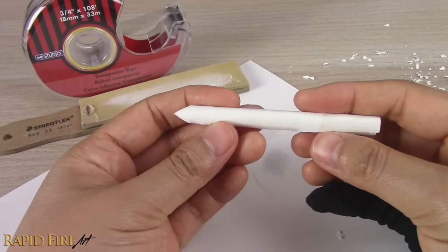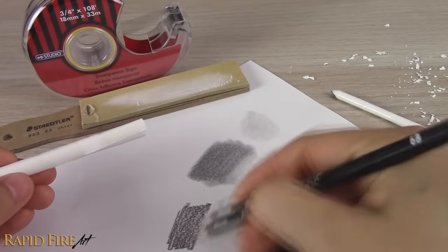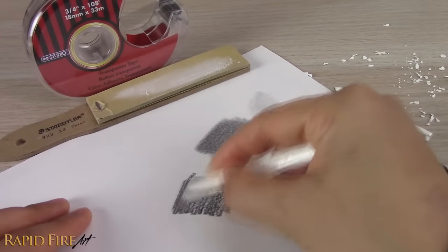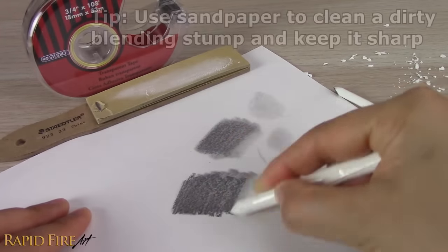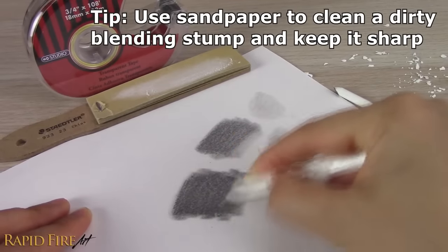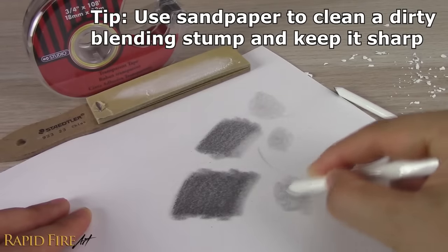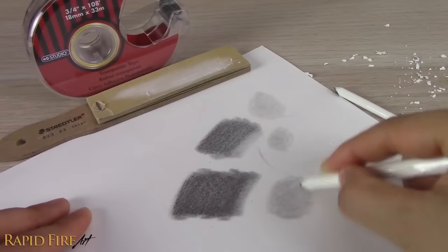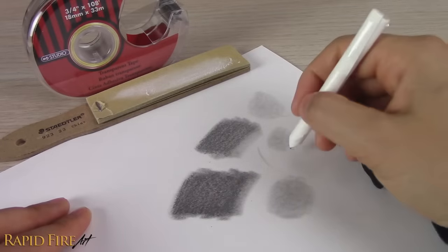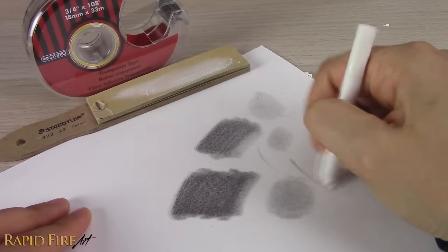I made this second blending stump out of even softer paper than the first. It spreads and grabs onto the graphite super well. Because the paper is so soft, the tip is not pointy or stiff enough to handle precision work. If I use the tip to blend detailed areas, they may end up looking too fuzzy.